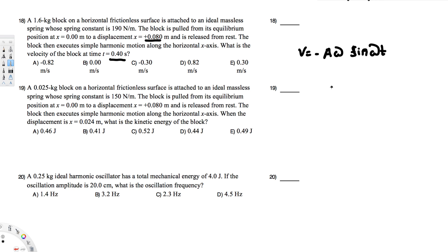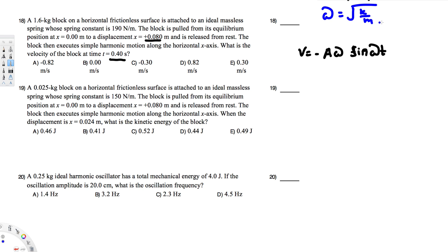We have the amplitude provided — because the block is pulled from equilibrium position to that displacement, that value is the amplitude. We have amplitude and time (t = 0.4), but we still need omega. To find omega, since we have the spring constant and mass, we use the equation ω = √(k/m).